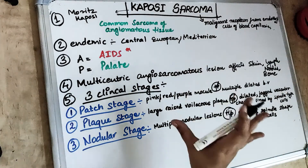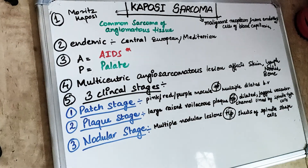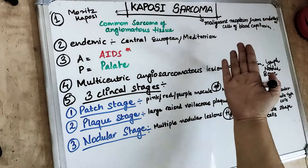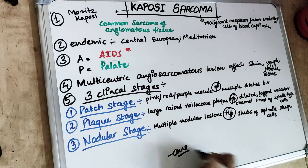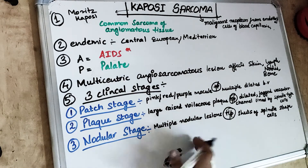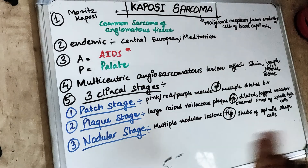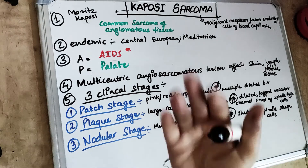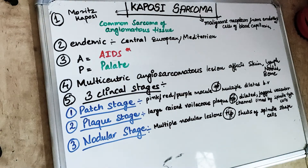We know that this is a sarcoma, that means it is going to be a malignant neoplasm. Sarcomas are mostly neoplasms of the connective tissues. So sarcomas and carcinomas are basically malignant neoplasms. 'Oma' means benign neoplasm. So Kaposi Sarcoma is a malignant neoplasm of the endothelial cells of the blood capillaries. It was first reported by Moritz Kaposi in 1872.